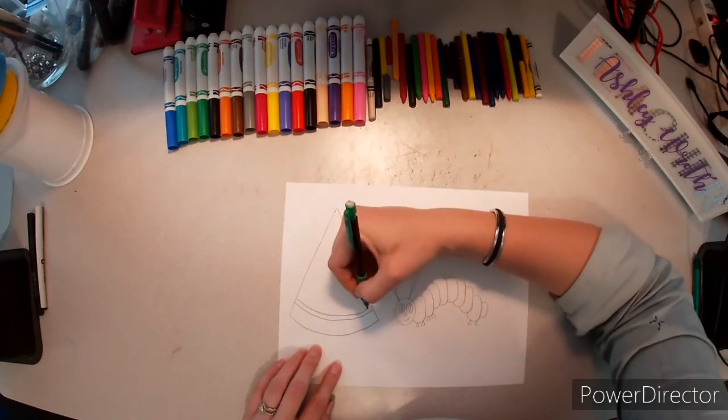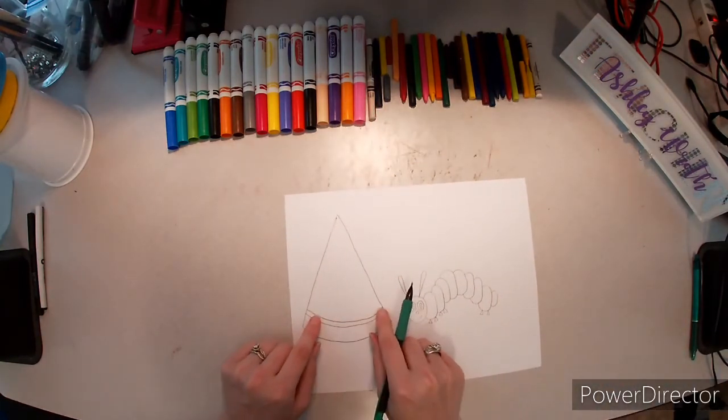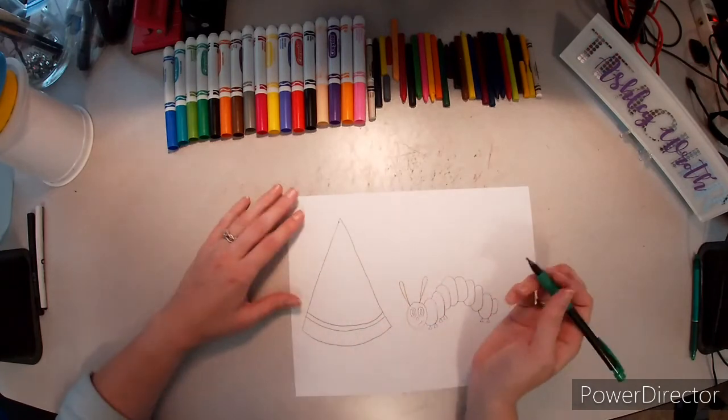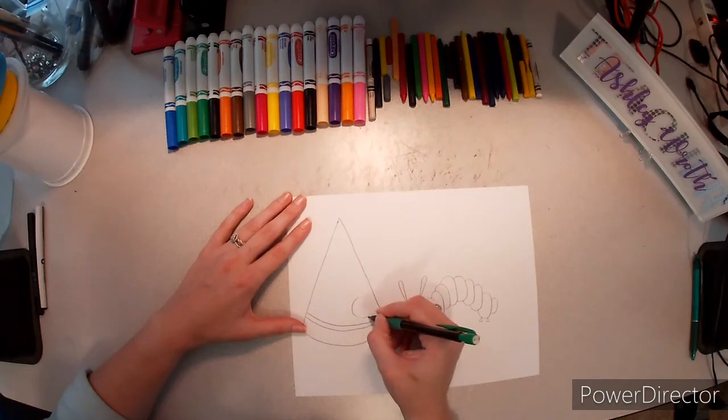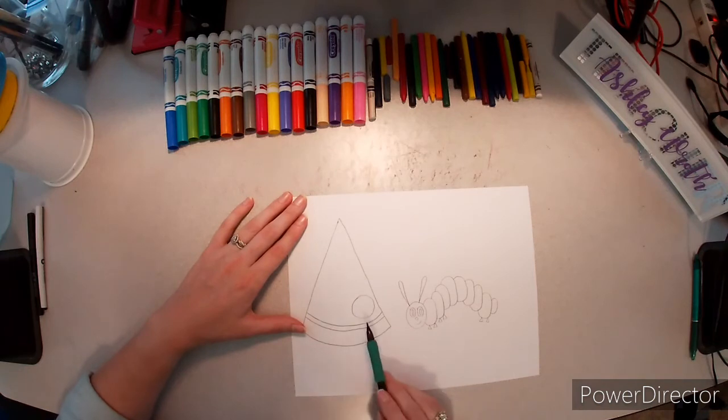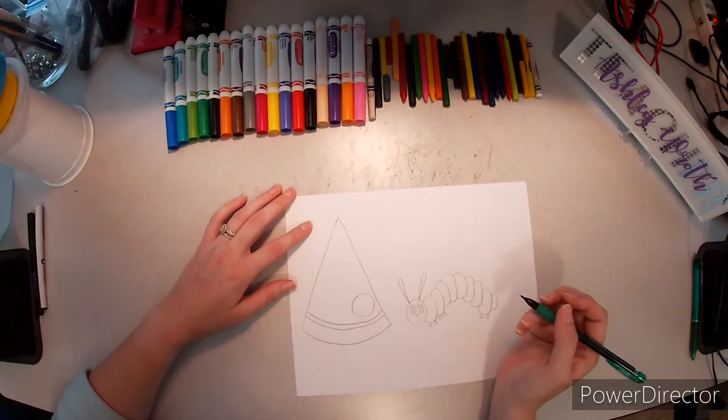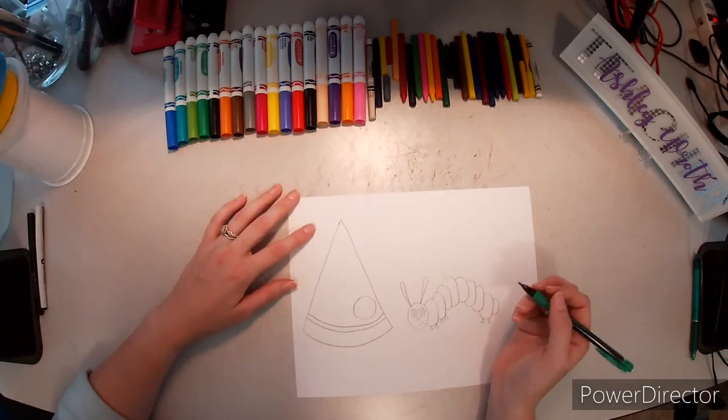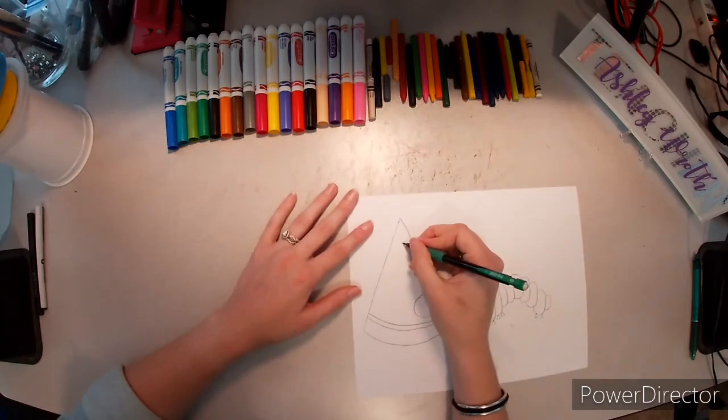These are for the different colors on a watermelon because you have the dark green edge and then you have a light green before it turns to red. Now, we're going to do a big circle like the caterpillar just ate his way through that spot on the watermelon. And you want it to be about the same size as his head so it looks like he could have fit through that hole.